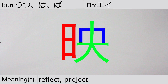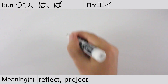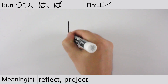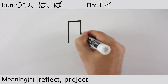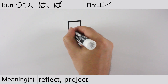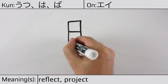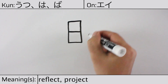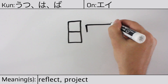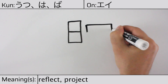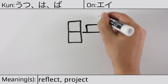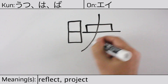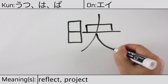Here's the stroke order: 1, 2, 3, 4, 5, 6, 7, 8, 9.